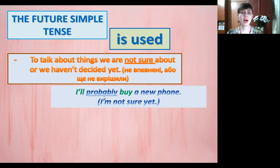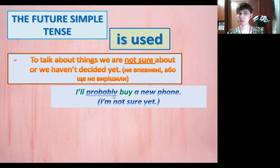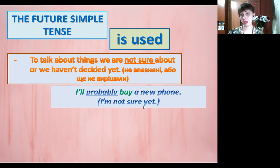For example: I probably buy a new phone – я вірогідно куплю новий телефон. Звертаємо увагу на слово probably, яке може вживатися в майбутньому простому часі. I'm not sure yet – я ще не впевнений. Можливо куплю, можливо не куплю. Ось така невпевненість дії передається через future simple tense. The word probably – вірогідно.